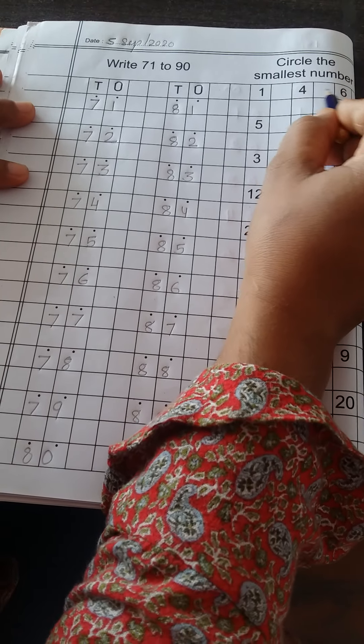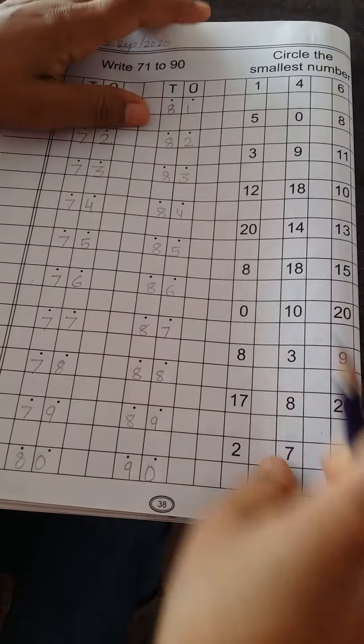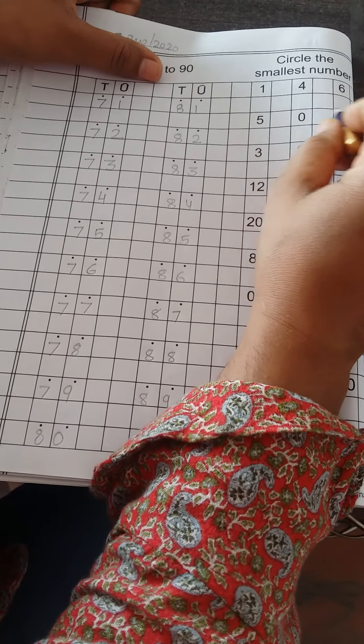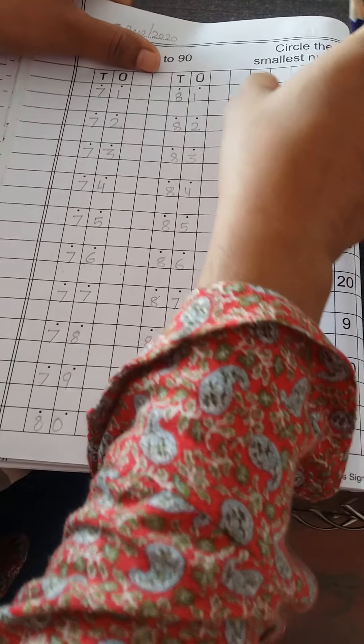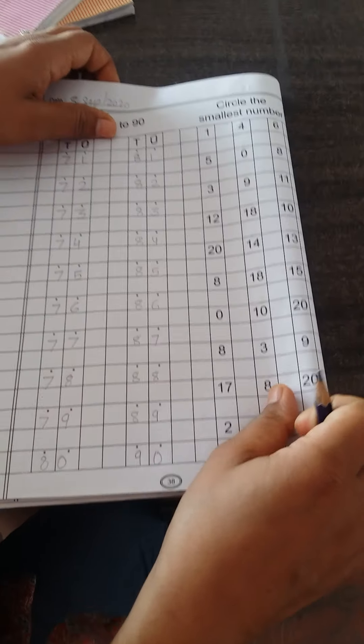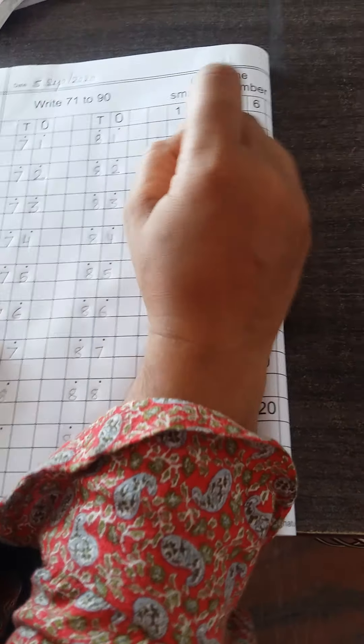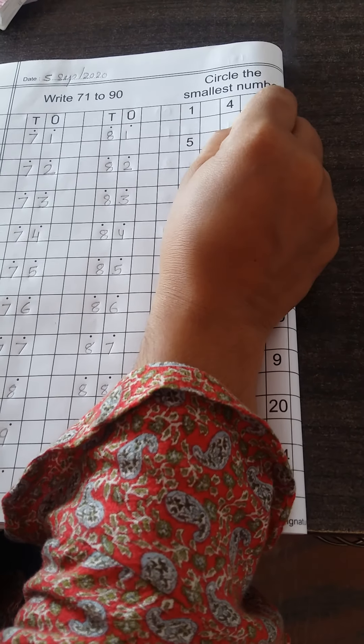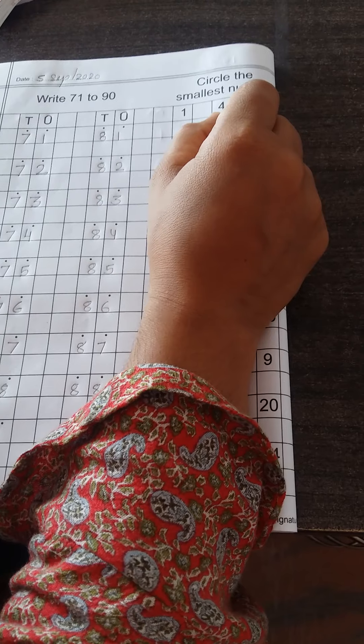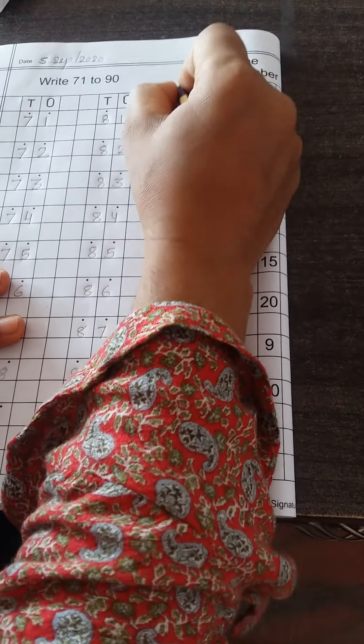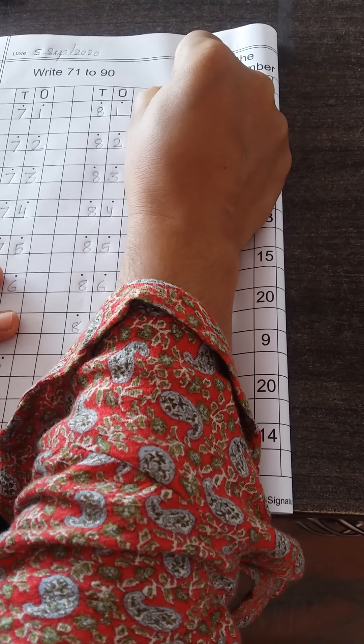Now circle the smallest number. Is line में सबसे छोटा number है उसको हमें क्या करना है? Circle करना है. अलग-अलग हमें columns दिये हुए हैं, अलग-अलग lines दिये हुई हैं. जिस line में सबसे छोटा number है उसको हमें circle करते जाना है. 1, 4, and 6. इसमें smallest number कौन सा है? 1. Circle दो? 1.